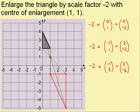I also need to check the size of it. I'm enlarging by a scale factor of minus 2. The 2 part of this means that all the lengths will double. So if I look here, I've got a length of 1 square, and on my new shape it's 2 squares, so that has doubled. Here I've got a length of 2 squares, and on my new shape that's 4 squares, so that has doubled.